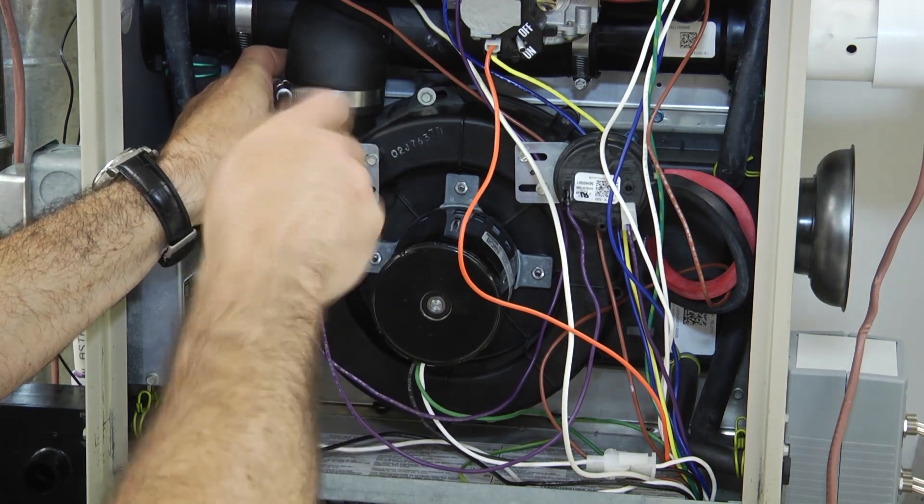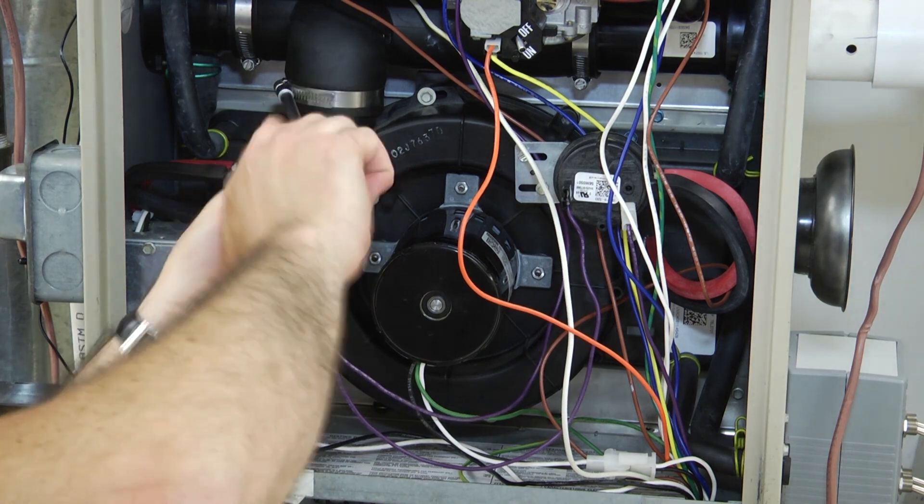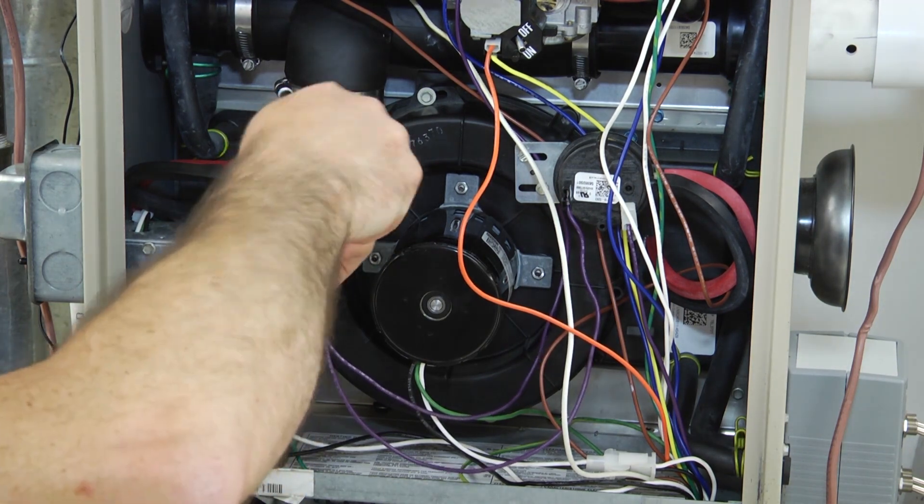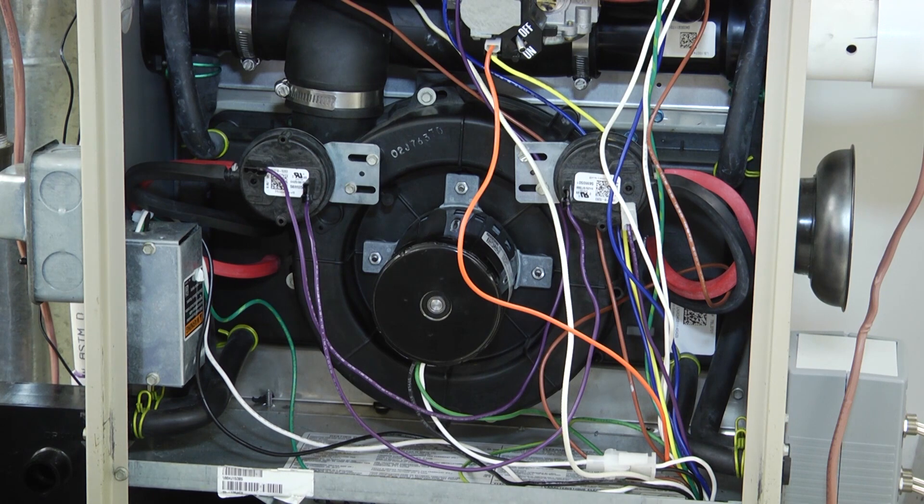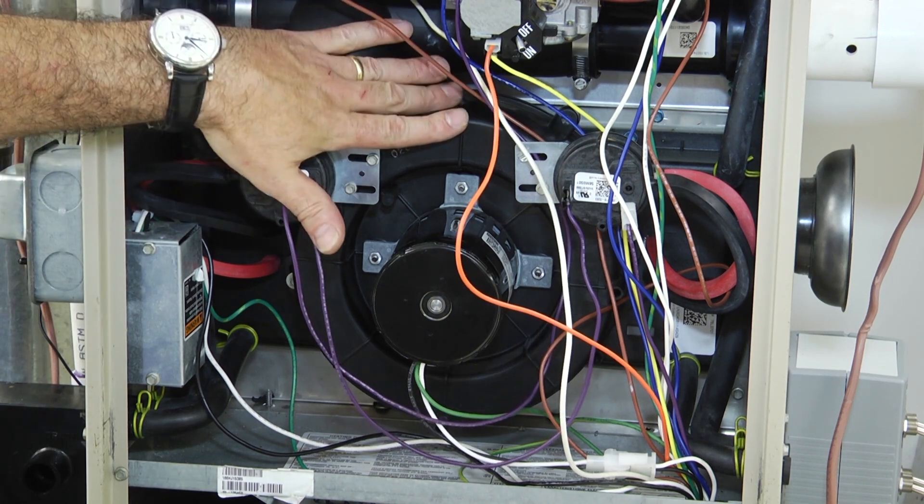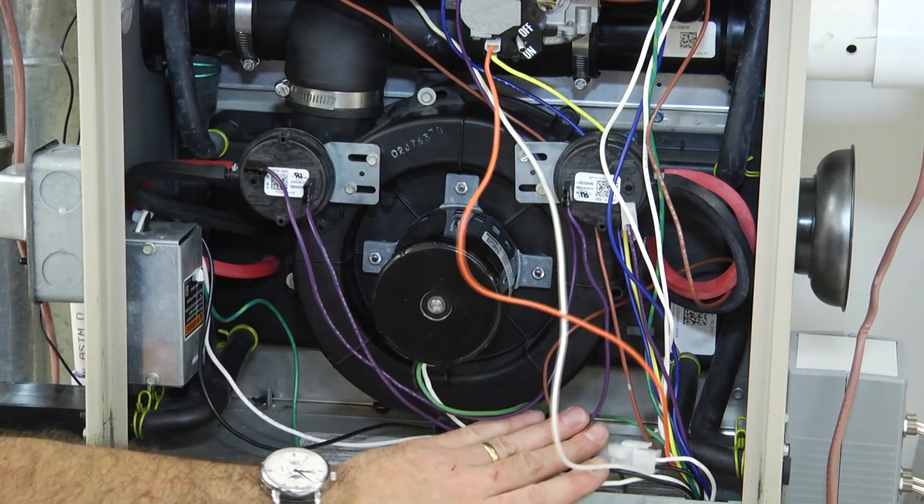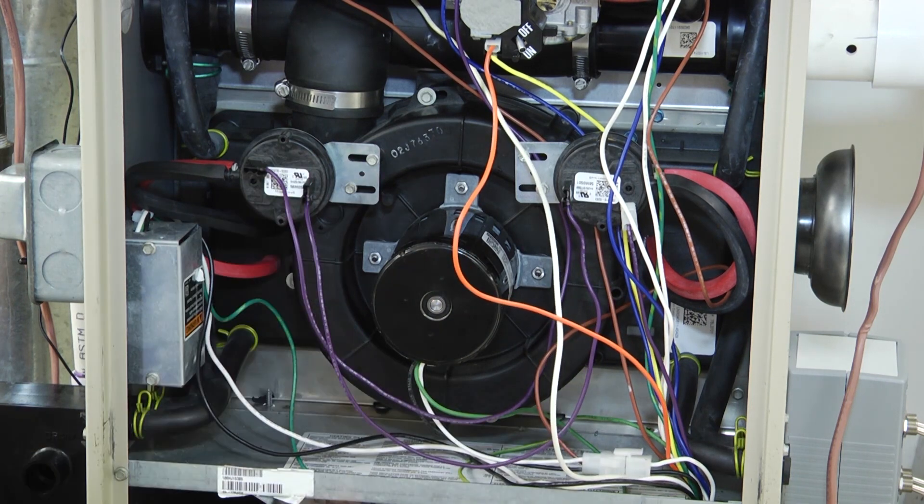If you don't get this thing nice and tight, what will happen is you'll get water coming out of it through the combustion process, and you'll have water all over the place. So again, make sure that your clamps run nice and tight. Your screws are back in place. You're all wired up and ready to go. That's it. You just replaced the venter motor.